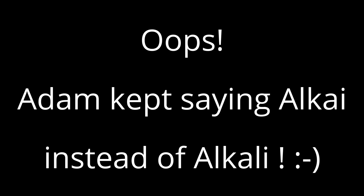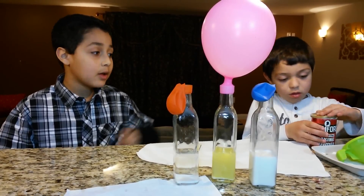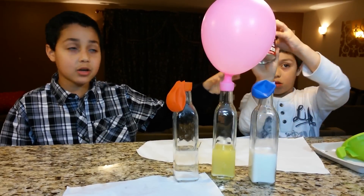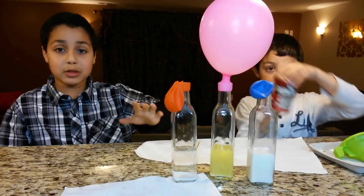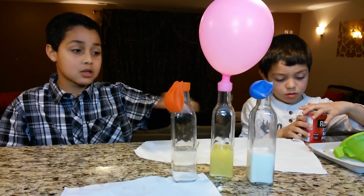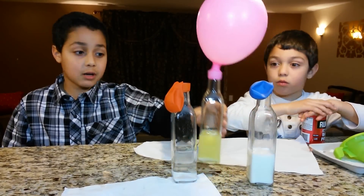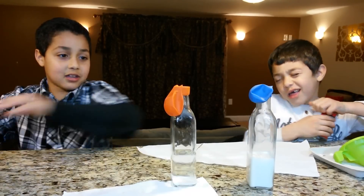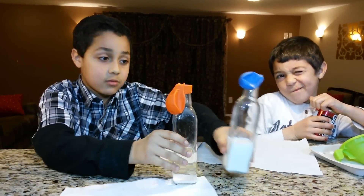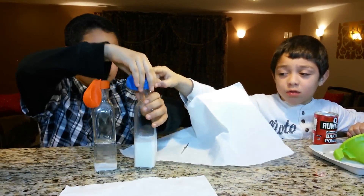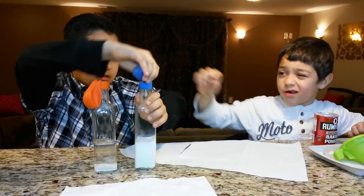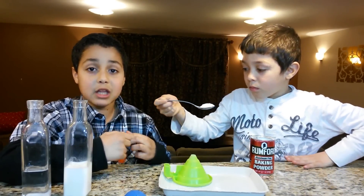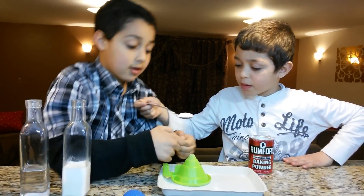Next experiment is with baking powder. The baking powder contains both acid and alkali, so we're going to see what happens. We'll put the other stuff to the side and only work with these two. We are going to be putting baking powder in the milk and notice what our results are.